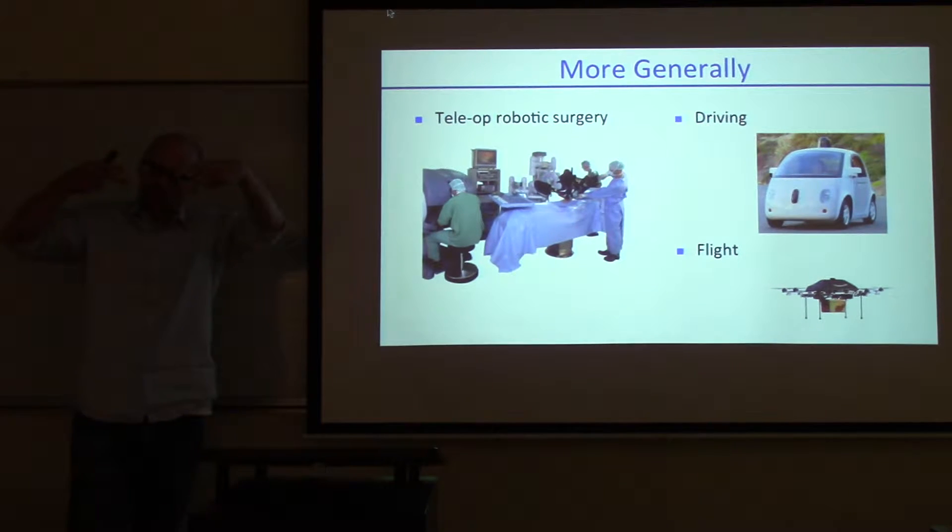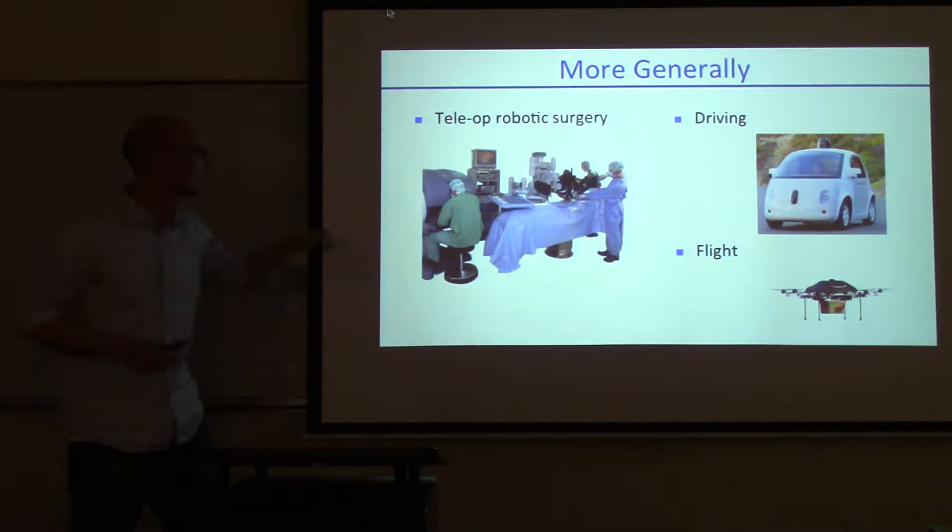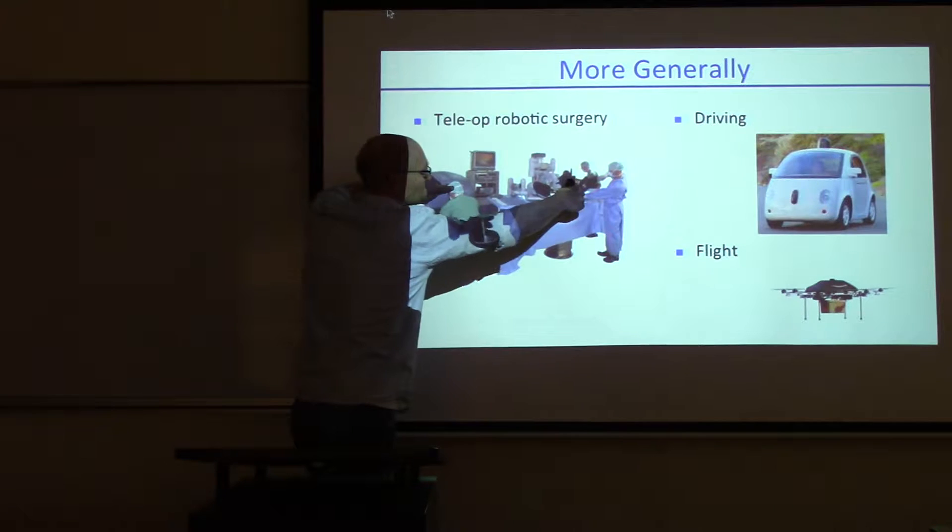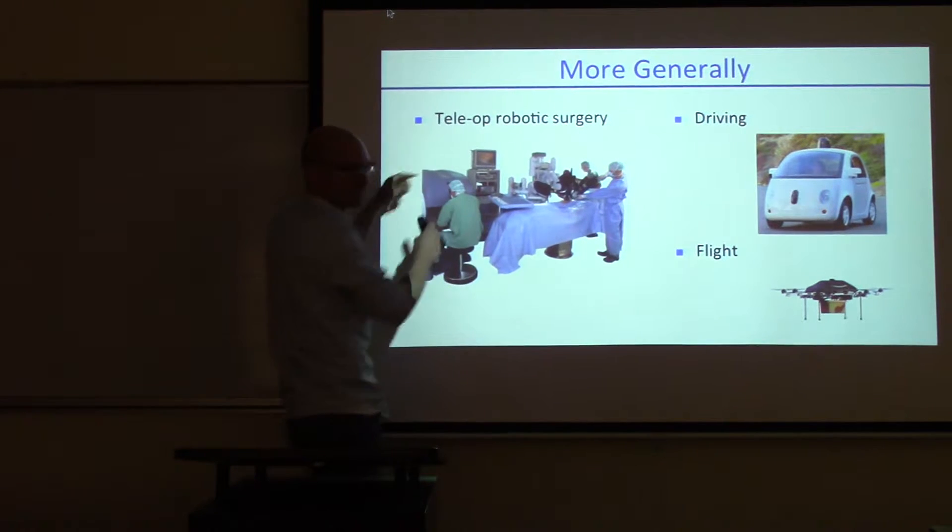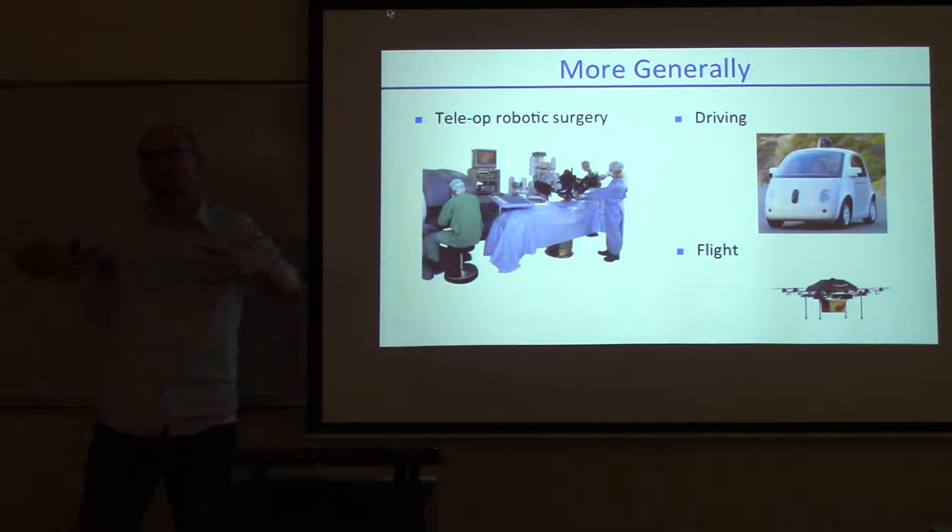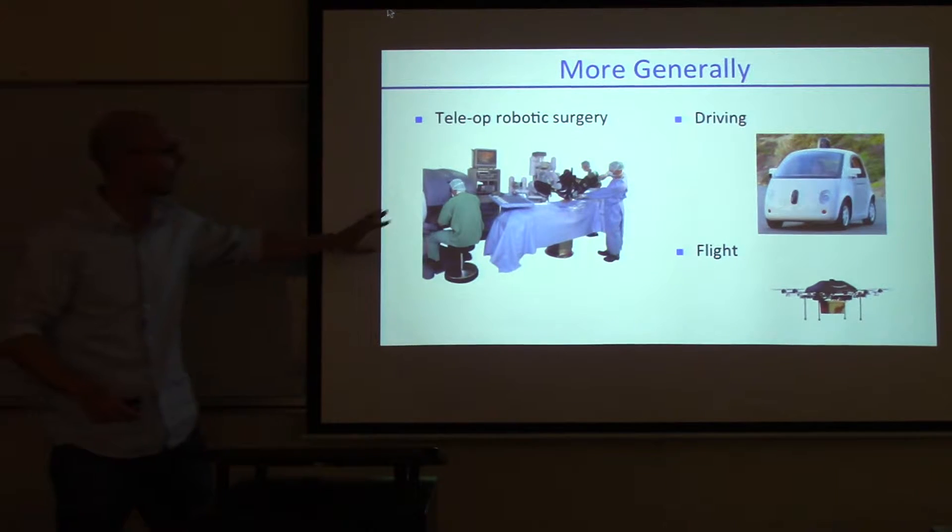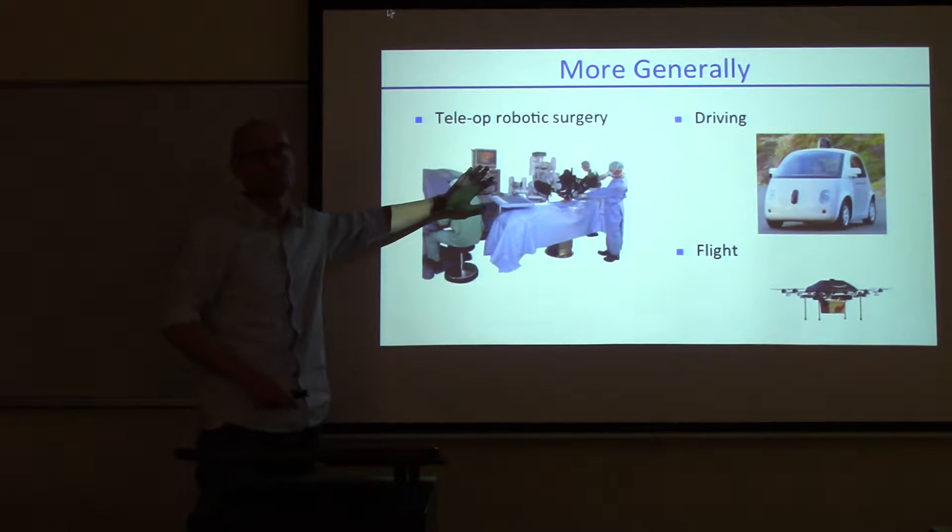There are two end effectors inside the patient, sometimes three, and a stereo camera. The surgeon can see through the stereoscopic camera what's happening inside the patient and gets immersed essentially in the patient. This way, about half a million surgeries get done each year in the United States.